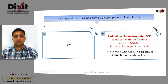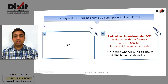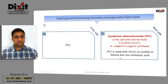PCC — it is pyridinium chlorochromate, a salt with the formula C₅H₅NH⁺CrO₃Cl⁻. It is a reagent used in organic synthesis. PCC is used with CH₂Cl₂ to oxidize alcohols to ketones but not to carboxylic acids.